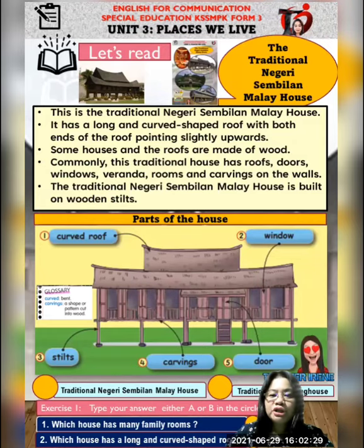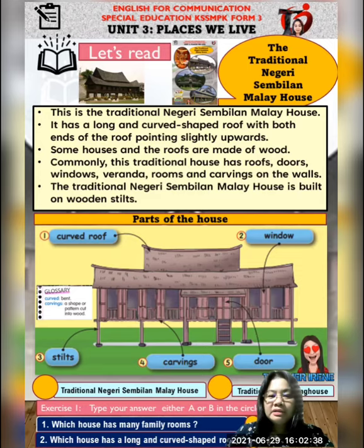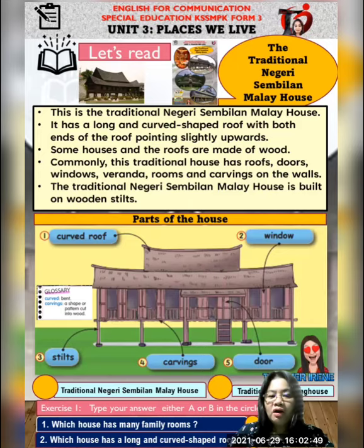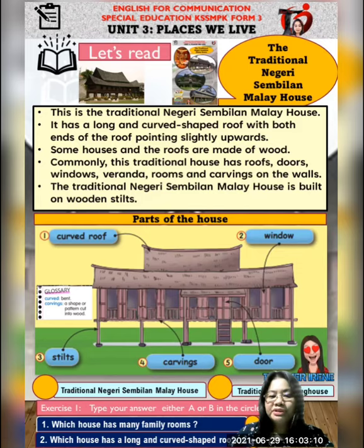Next we are going to look at this traditional Negeri Sembilan Malay house. Let us read together. This is the traditional Negeri Sembilan Malay house. It has a long and curved-shaped roof with both ends of the roof pointing slightly upwards. Some houses and the roofs are made of wood. Commonly, this traditional house has roofs, doors, windows, veranda, rooms and carvings on the walls. The traditional Negeri Sembilan Malay house is built on wooden stilts.